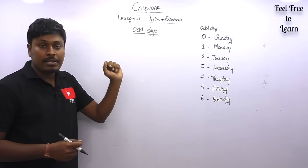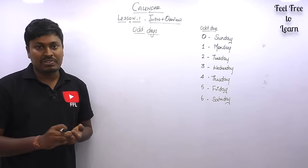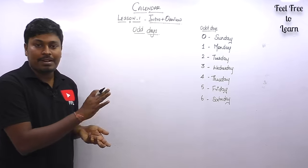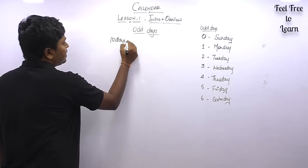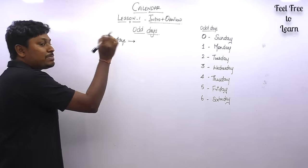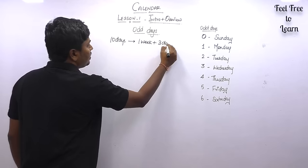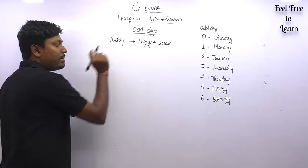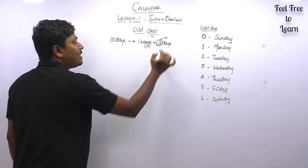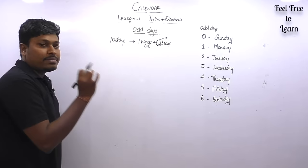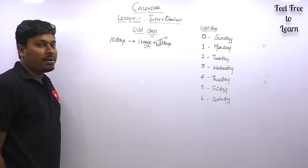Now let's move on to one of the most important concepts in the calendar topic: the odd day. An extra day beyond a complete week is called an odd day. For example, in 10 days: 10 = 1 week + 3 days. So 10 days contains 1 week and 3 odd days. The days left over after making complete weeks are the odd days.